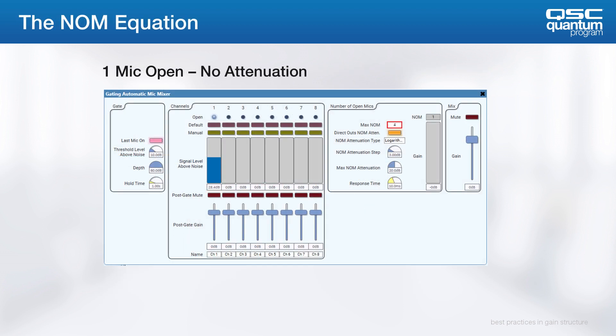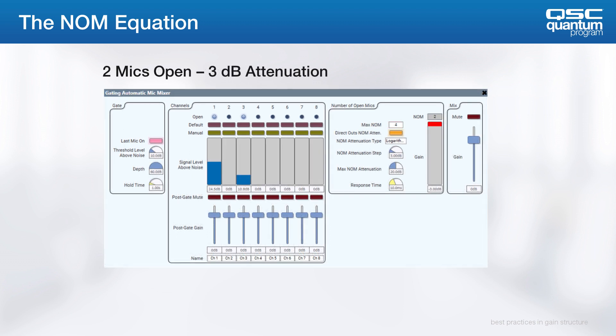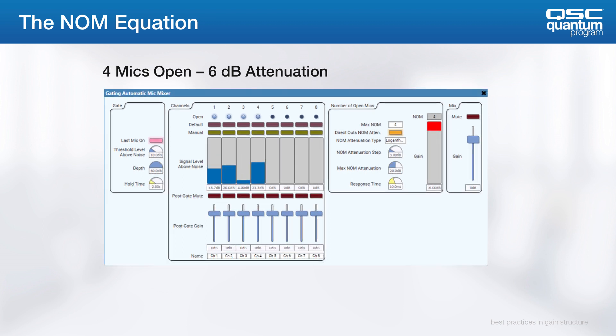In this scenario, the NOM is set to 1, and as you can see, there is no attenuation. Then, when I open two mics, there is 3 dB of attenuation. Then, when you have four NOMs, you get 6 dB of attenuation. You get the idea.